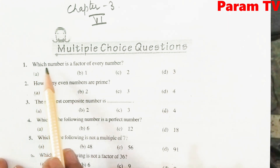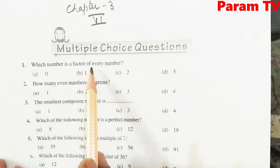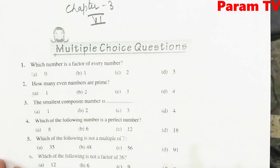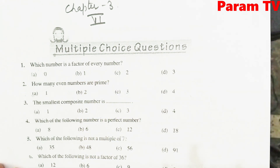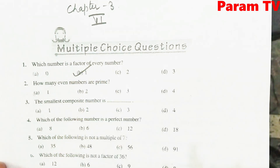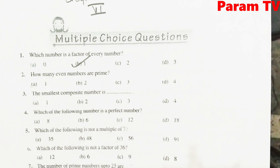Now, which number is a factor of every number? That is 1. 1 is the factor of every number. B is the right option.